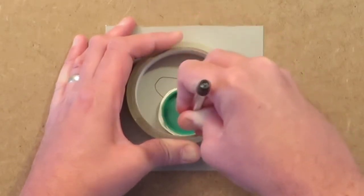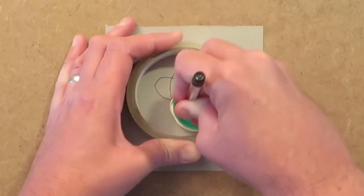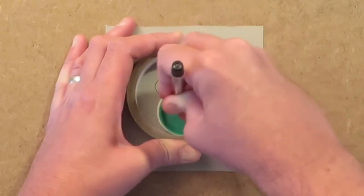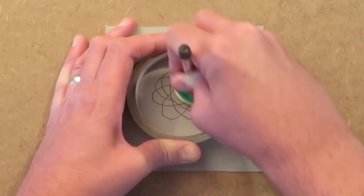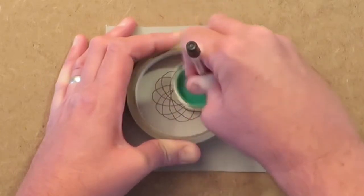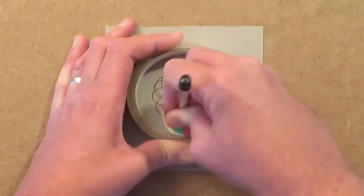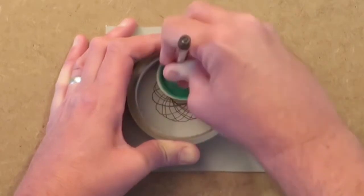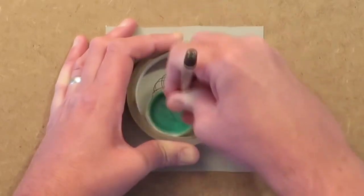Then using the pen, carefully move the spirograph wheel around the inside edge of the roll of sticky tape and you'll see your pattern beginning to form. Continue this until the pattern looks even and there's your first spirograph artwork.